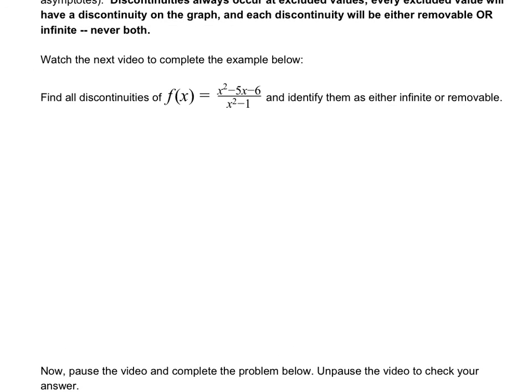First of all, you start with your rational function and, as we did in many of the other parts, you factor it. You would have already done this to find some of the other stuff. Then secondly, you identify excluded values, because at every excluded value there is going to be a discontinuity. Here, we have an excluded value of negative 1 and a positive 1.